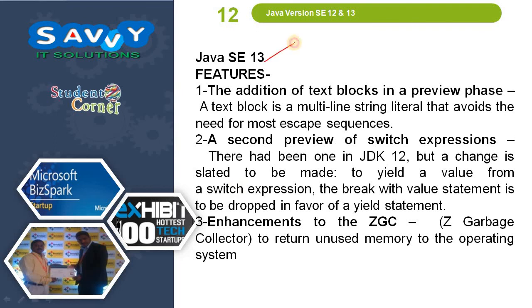In JDK 13, the addition of text blocks in a preview phase — a text block is a multi-line string literal that avoids the need for most escape sequences. A second preview of switch expressions was introduced, with a change where the break-with-value statement is dropped in favor of a yield statement to return a value from a switch expression. Enhancements to the ZGC (Z Garbage Collector) to return unused memory to the operating system.